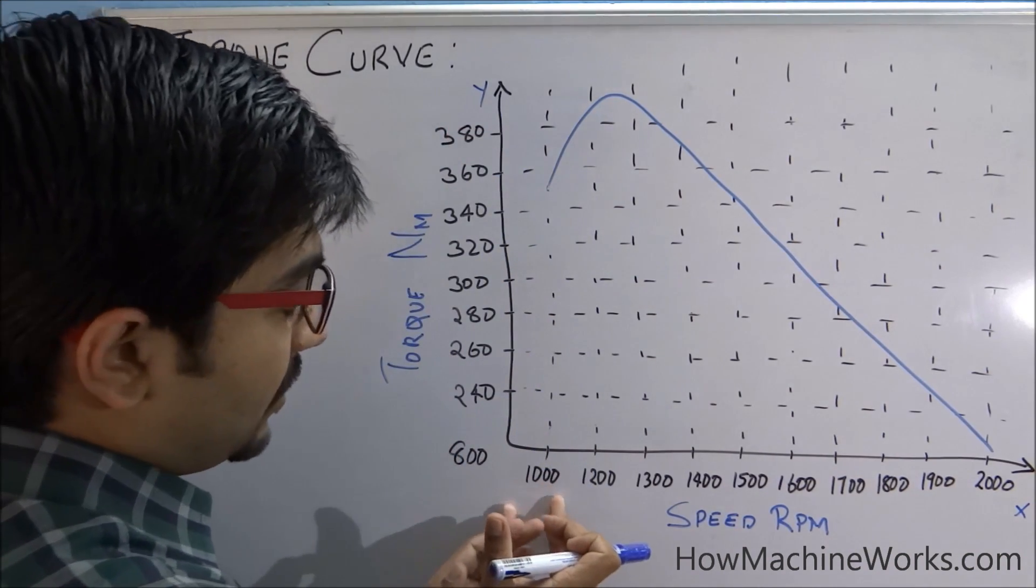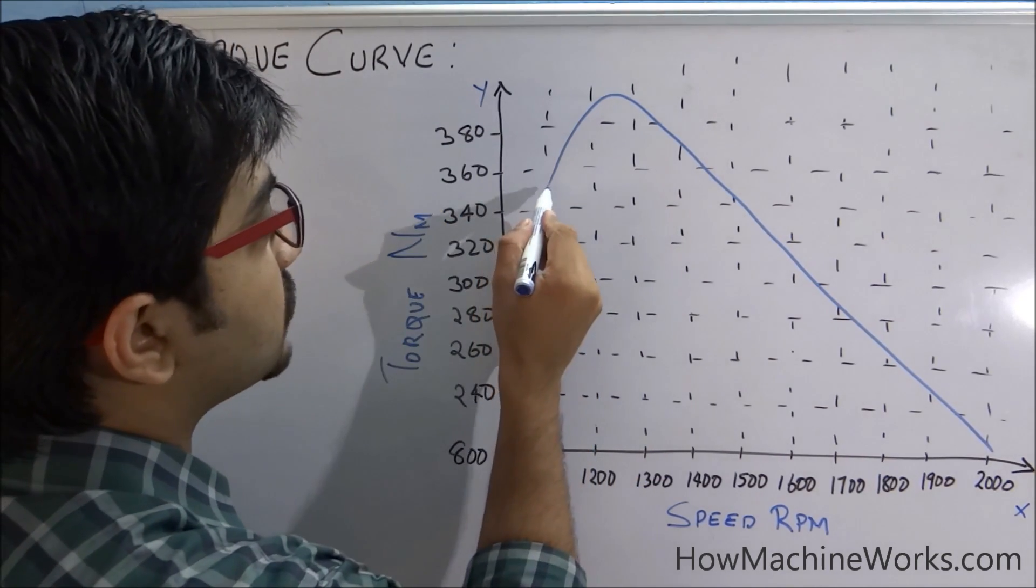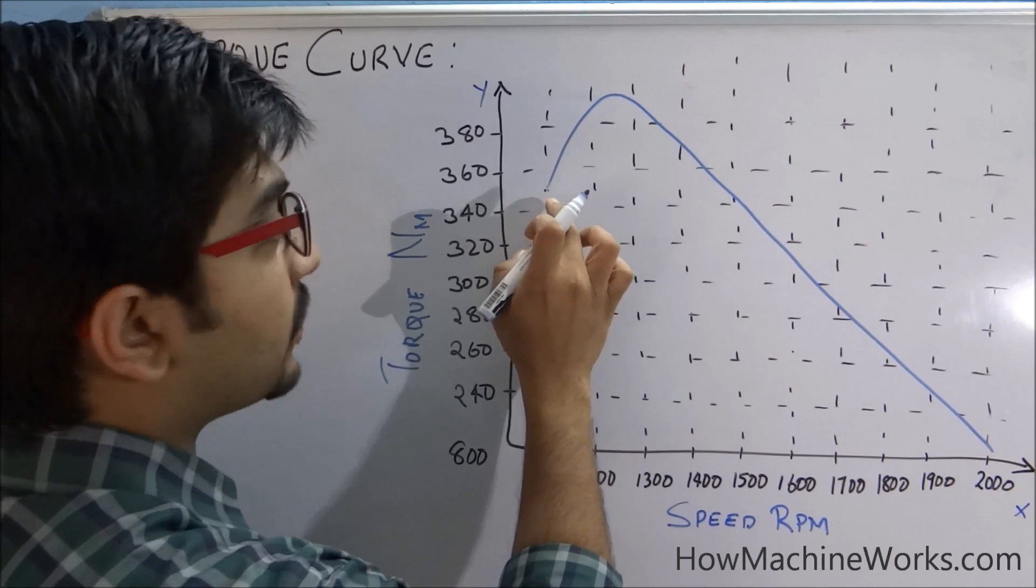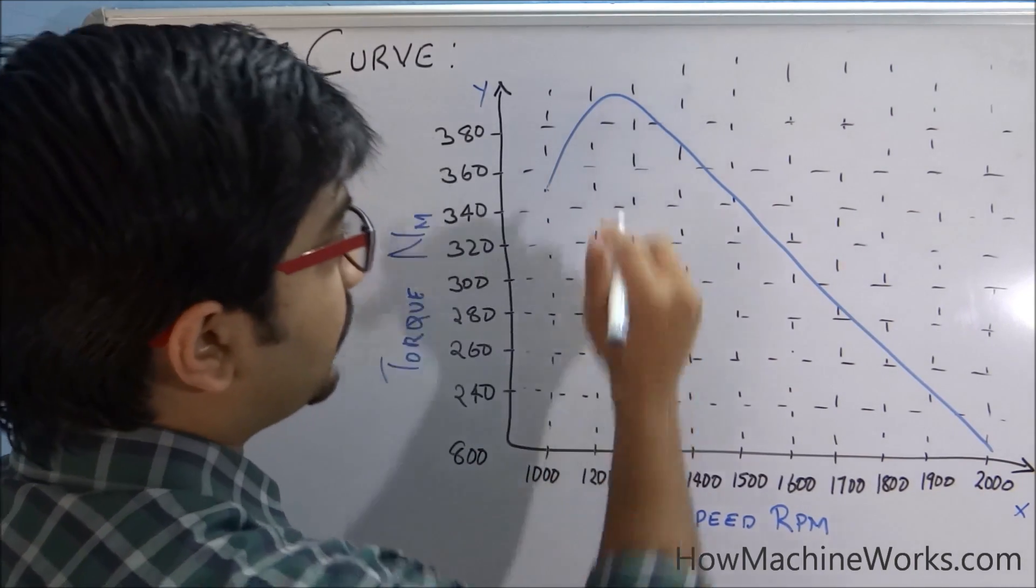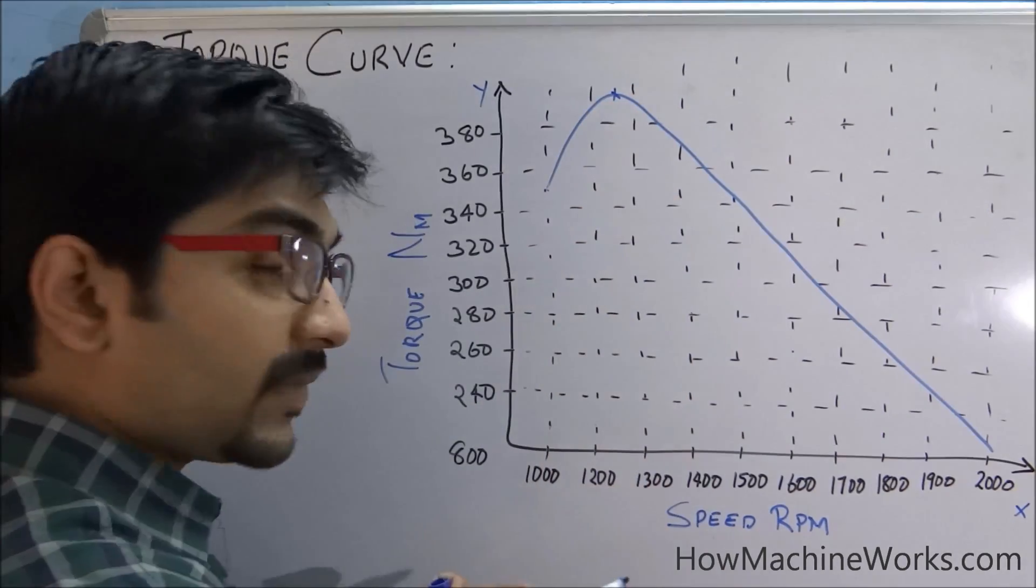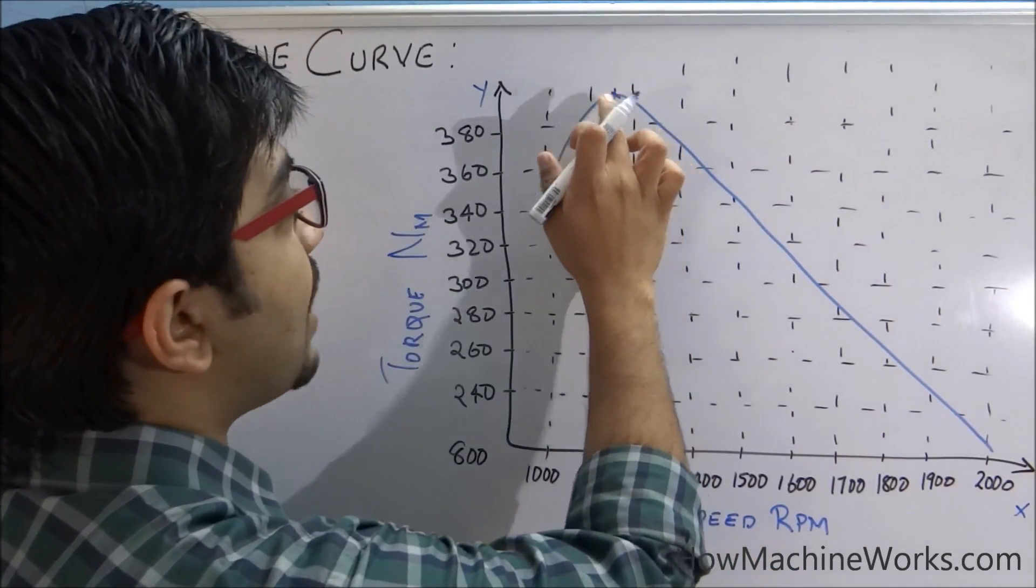So initially at 1000 RPM, you can see we have almost 350 Newton meters of torque, and it gradually increases. And when it reaches about 1250, at this point of time at 1250 speed or RPM, that gives the maximum torque, that is 400 Newton meters.